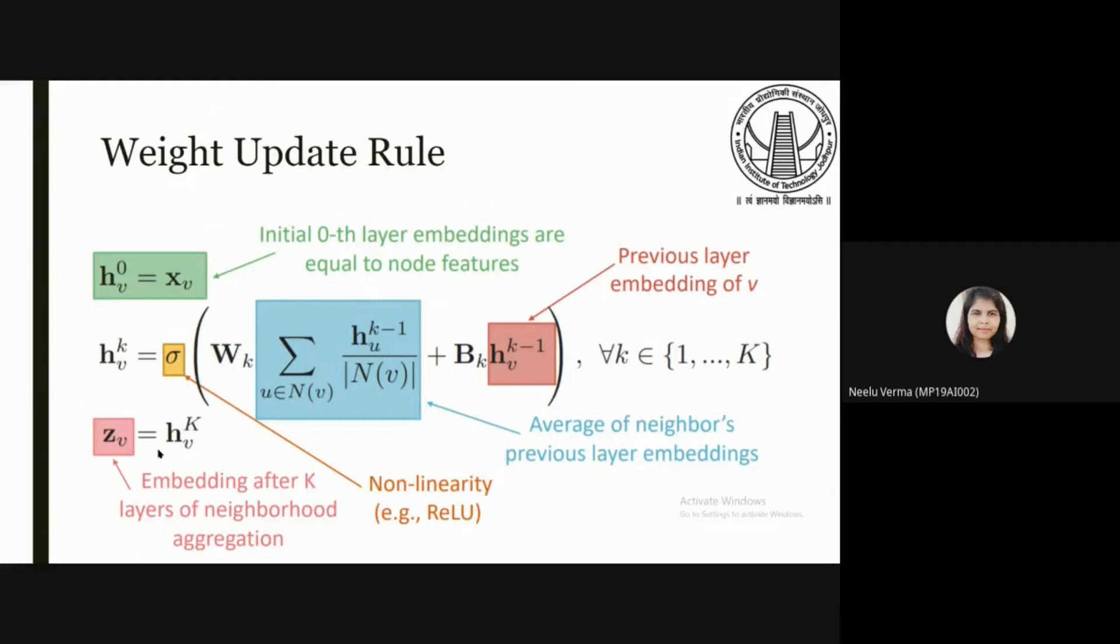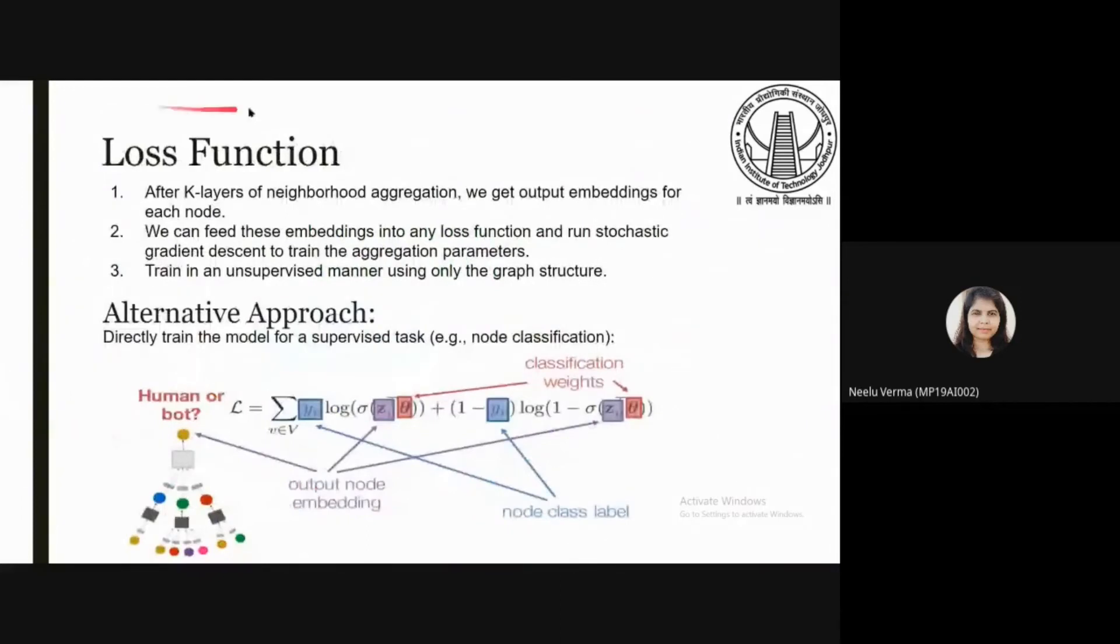Now the question is how do we train the model to generate high quality embeddings? For this we need to define a loss function on the embedding Z. After kth layer of neighborhood aggregation we get output embedding for each node. We can feed these embeddings into a loss function and run stochastic gradient descent to train the aggregation parameters. Then train in an unsupervised manner using only the graph structure. The alternative approach is to directly train the model for a supervised task, that is node classification.